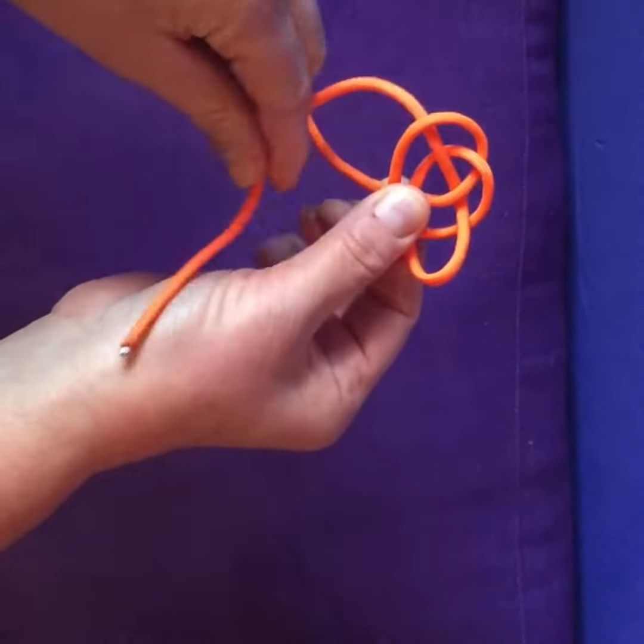Now, the key to the Celtic button knot is not to tighten it quickly. You have to kind of massage it and squeeze with your thumb and forefinger and tighten a little at a time, getting rid of all of the slack just a little at a time, until, after working with it, you have your Celtic button knot.